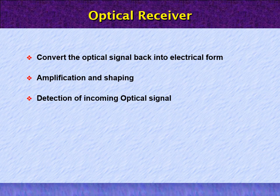An optical receiver has three functions: conversion from optical to electrical signal, amplification and shaping, and detection of incoming optical signal. First of all, it detects the optical input signal, then it converts the optical signal back into electrical form and the signal will be amplified and well shaped, so reconstruction is possible.